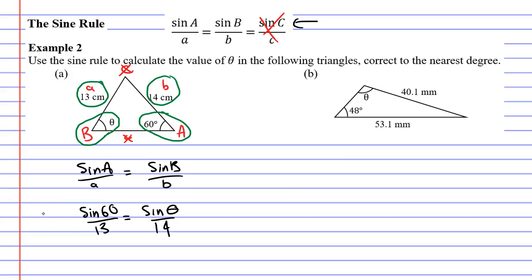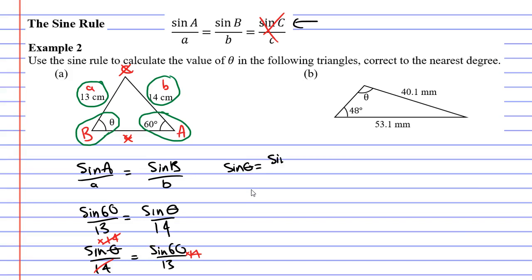Sine of θ is on the right-hand side, and we usually like to have it on the left-hand side. That's not a problem because we can swap sides with the two fractions — sine θ over 14 on the left-hand side and sine 60 over 13 on the right-hand side. On the left we have sine θ divided by 14, so we multiply both sides by 14 to cancel it out, giving us sine θ on the left and sine 60 over 13 times 14 on the right.